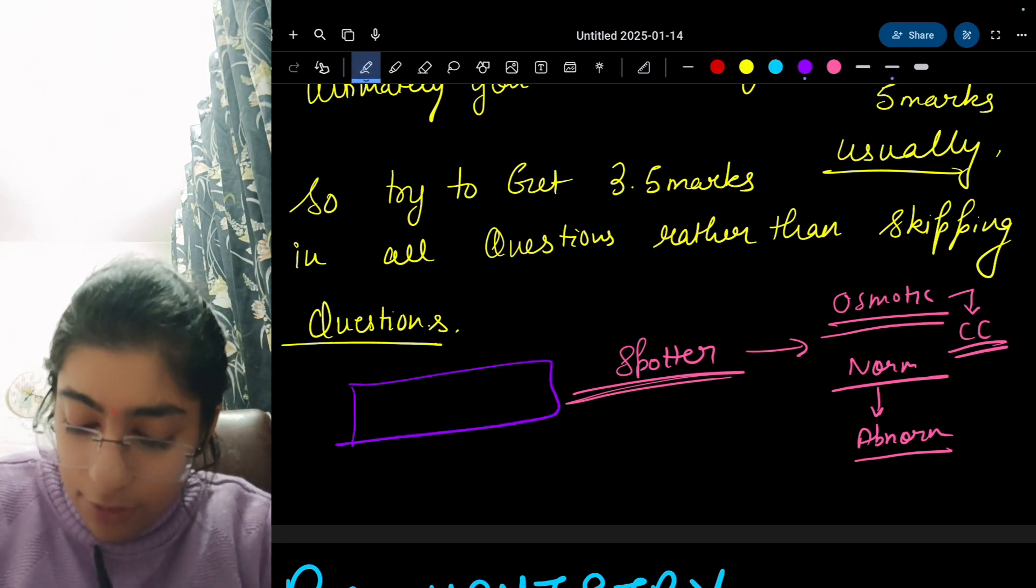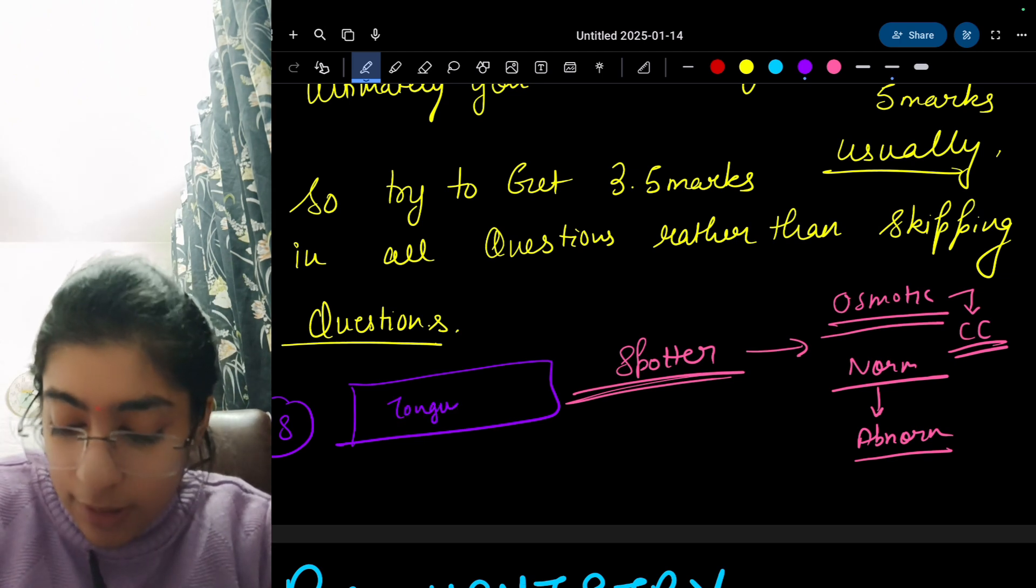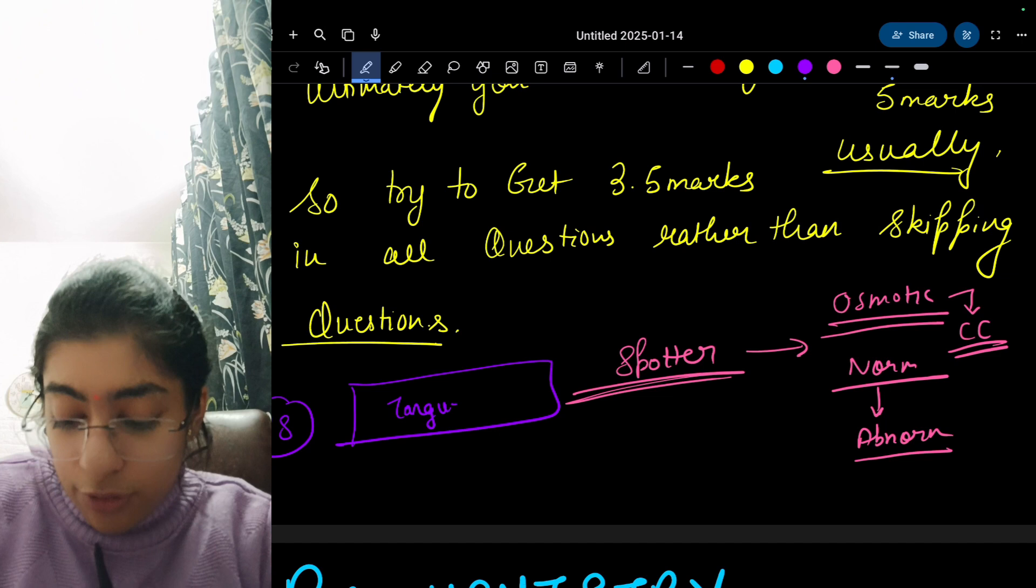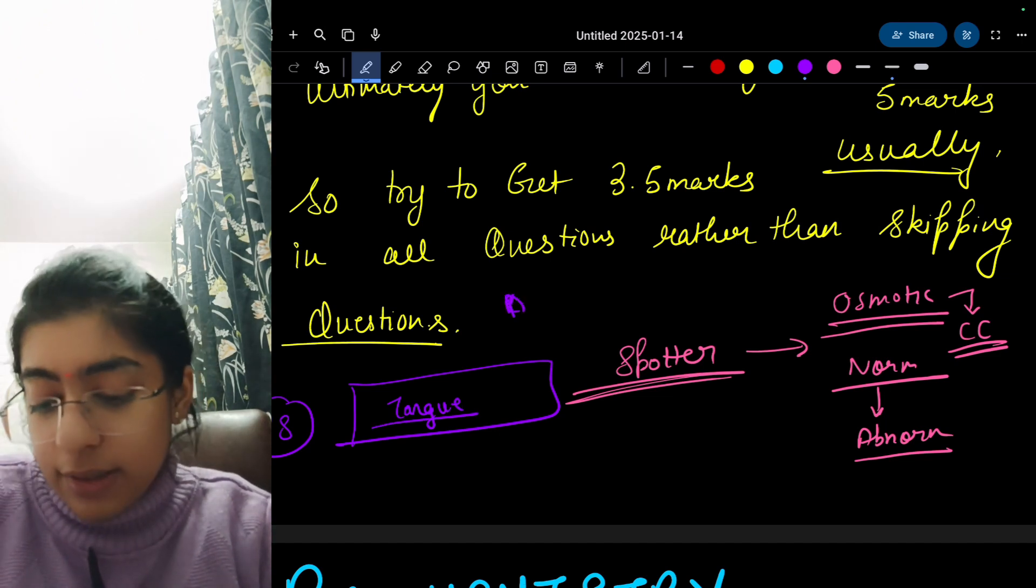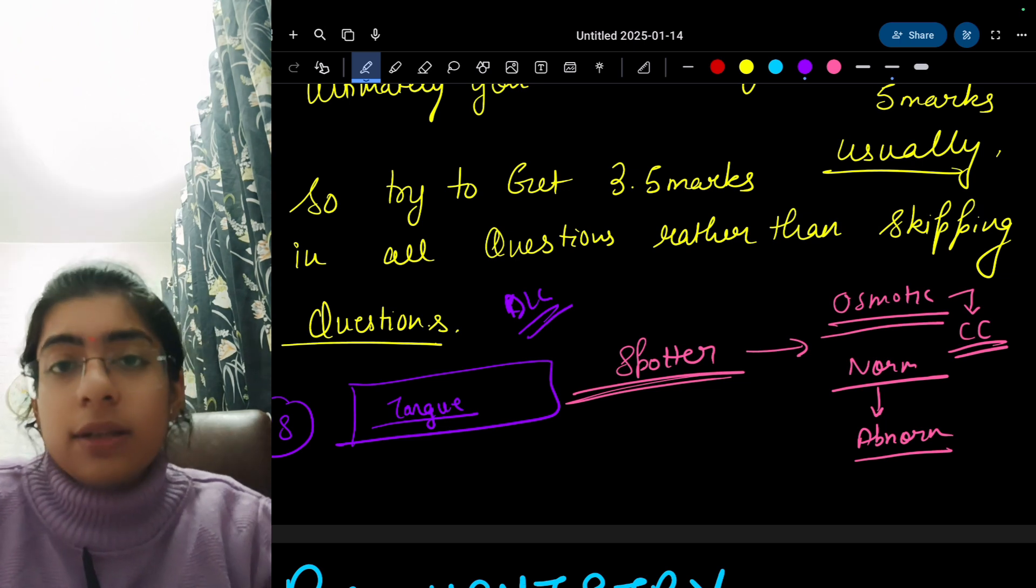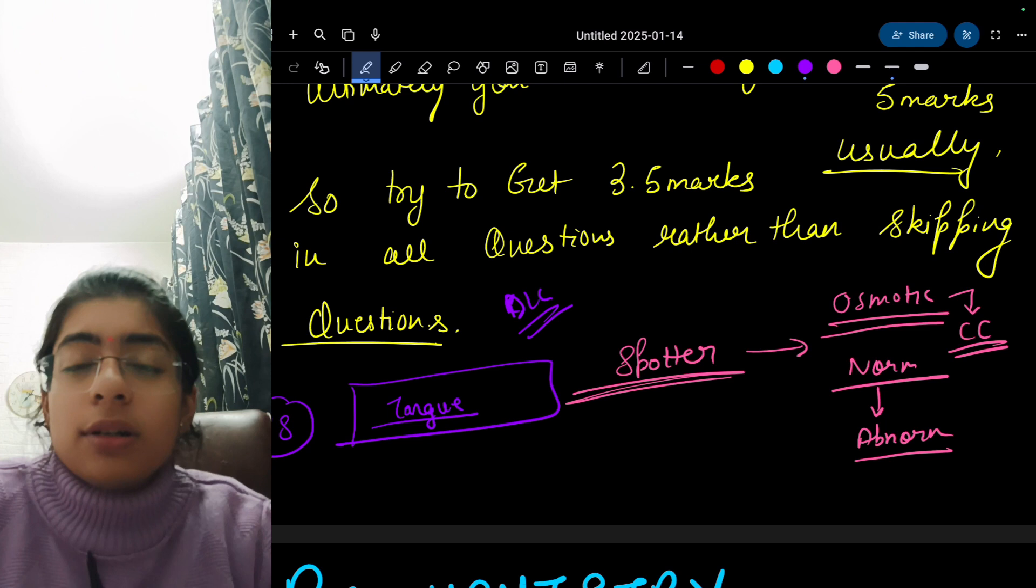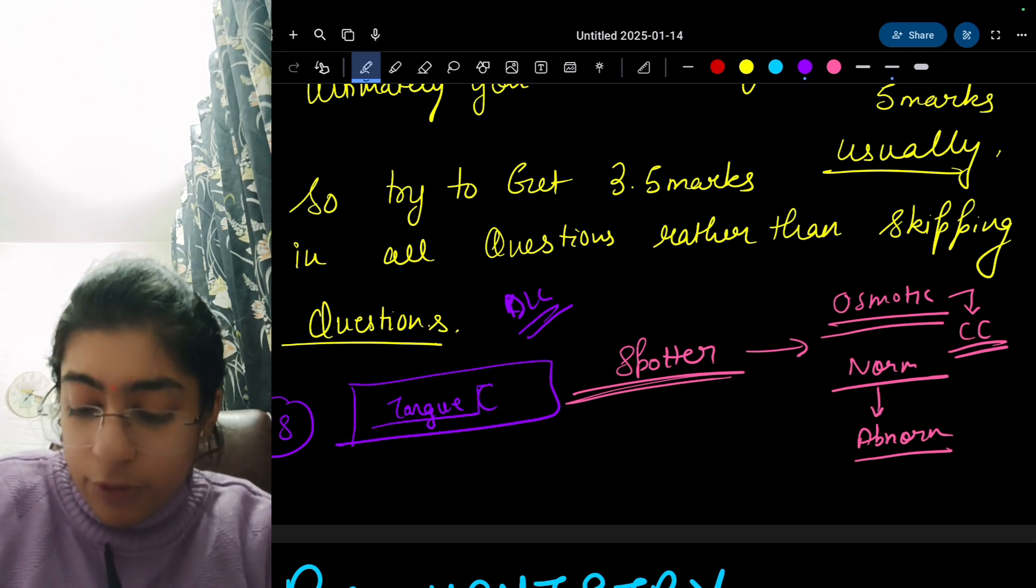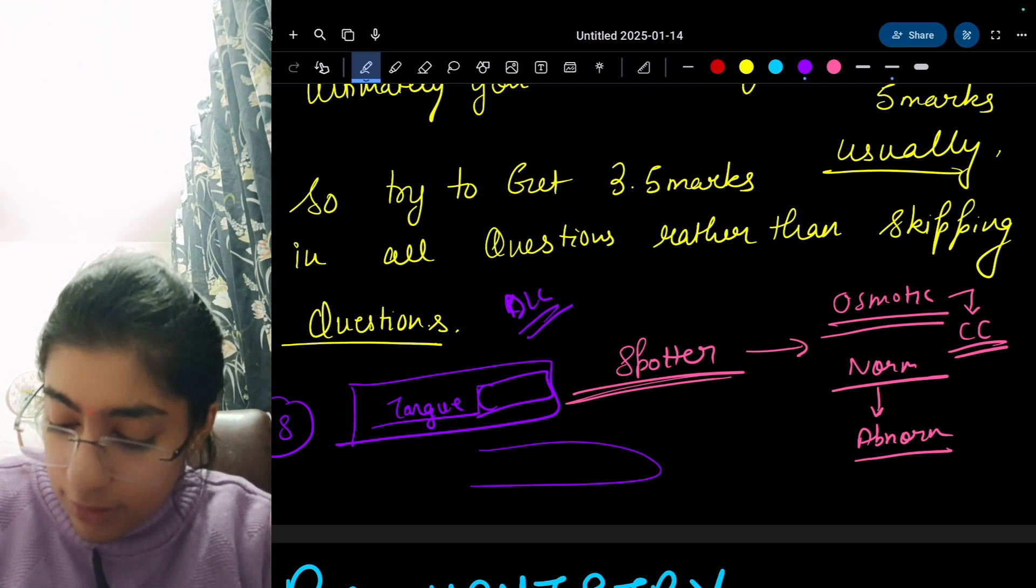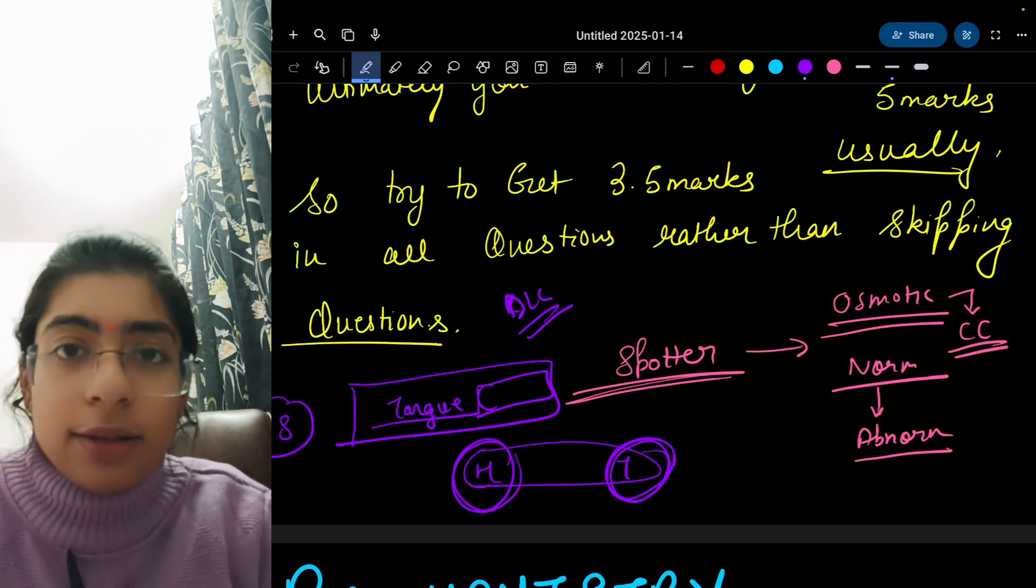As a last tip, when you draw a peripheral smear, ensure that it is tongue shaped and ensure which - the RBC or basically the DLC - which one has to be seen from which end, like tail end or head end or the body, in which view you have to see it. If this is your head end and this is the tail, you have to see the slide here or here. You need to ensure that thing also.